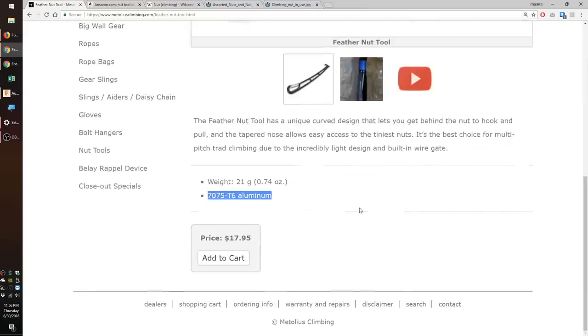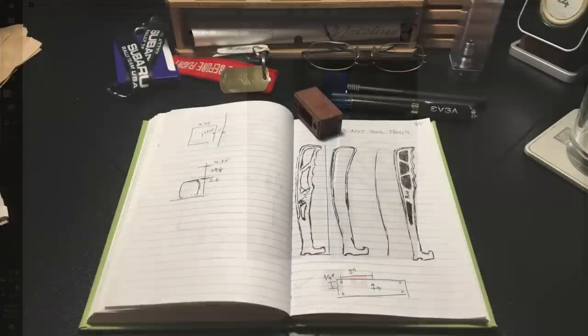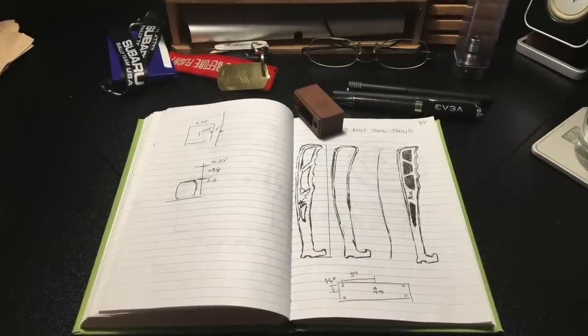One thing I immediately noticed about the Metolius tool was its use of 7075 aluminum, which is harder than the more prevalent 6061 alloy. So, I decided to follow suit and manufacture a tool from the same grade of aluminum.